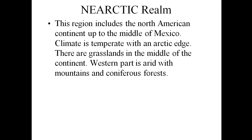Wallis and Slatter classified this earth into 6 biogeographical realms: Palearctic, Ethiopian, Oriental, Australian, Nearctic, and Neotropical. In the last class we tried to understand two biogeographical realms — the Palearctic and the second one, African, which was earlier known as Ethiopian.